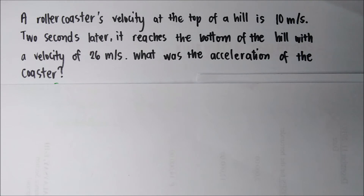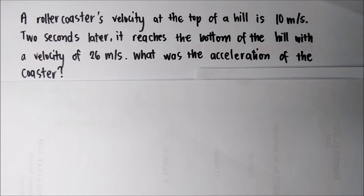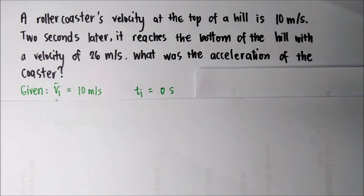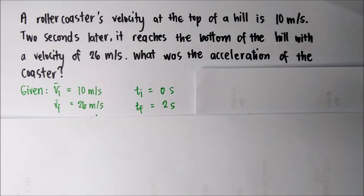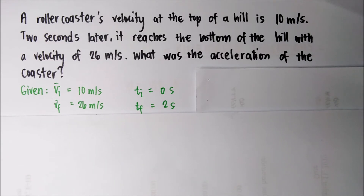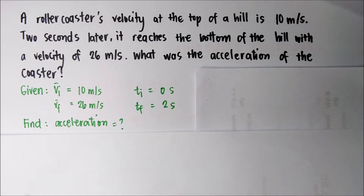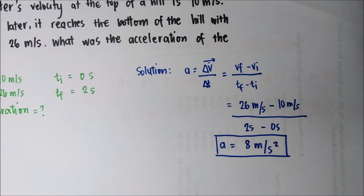Now let's have a problem related to acceleration. A roller coaster's velocity at the top of a hill is 10 meters per second. Two seconds later, it reaches the bottom of the hill with a velocity of 26 meters per second. What was the acceleration of the coaster? Given: initial velocity = 10 meters per second, initial time = 0 seconds, final velocity = 26 meters per second, final time = 2 seconds. Using the acceleration formula: 26 meters per second minus 10 meters per second, divided by 2 seconds minus 0 seconds. Our final answer is 8 meters per second squared.